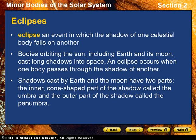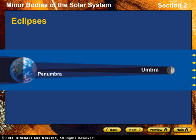Eclipses. Bodies orbiting the sun, including Earth and its moon, cast long shadows into space. An eclipse occurs when one celestial body passes through the shadow of another. Shadows cast by Earth and the moon have two parts. In the inner, cone-shaped part of the shadow, the umbra, sunlight is completely blocked. In the outer part of the shadow, the penumbra, sunlight is only partially blocked, as is shown on the screen here.